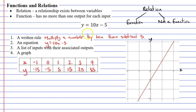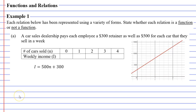So what does a relation look like when it's not a function? The best way to answer that is to go into the examples now. We're going to look at some relations and state whether each relation is a function or not a function. We will be completing three examples, questions A through to C. So we'll start with question A.